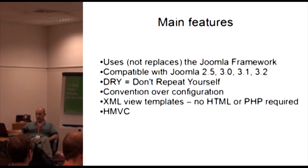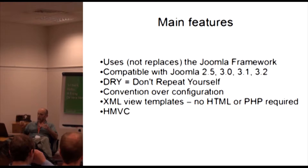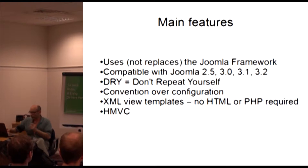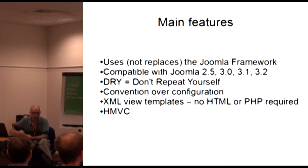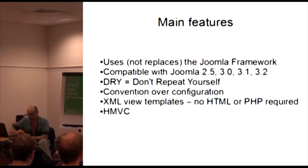One key feature is that Nicholas is passionate about not repeating yourself in code — the DRY principle. When you write a classic conventional Joomla extension, you end up writing similar code in different files to perform the same functions. Nicholas has done a lot of work to eliminate that. We'll see later what those gains look like in terms of the number of lines of code and number of files needed to create a simple component.